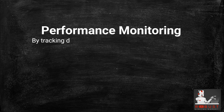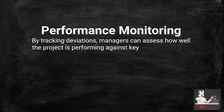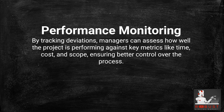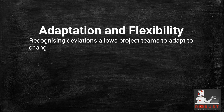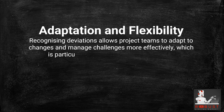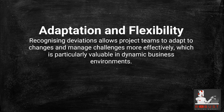Performance Monitoring: By tracking deviations, managers can assess how well the project is performing against key metrics like time, cost, and scope, ensuring better control over the process. Adaptation and Flexibility: Recognizing deviations allows project teams to adapt to changes and manage challenges more effectively, which is particularly valuable in dynamic business environments.